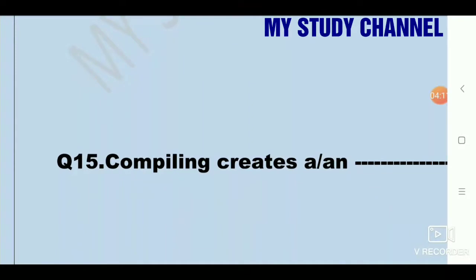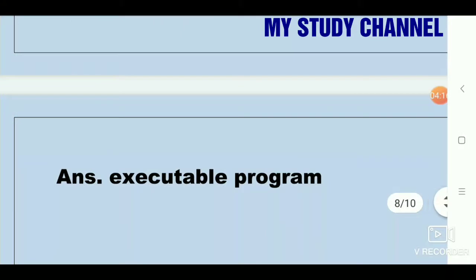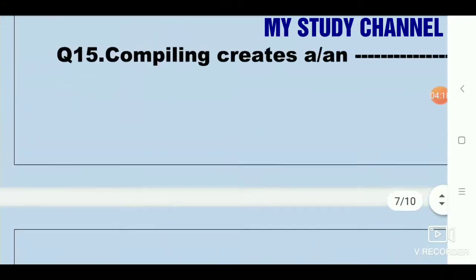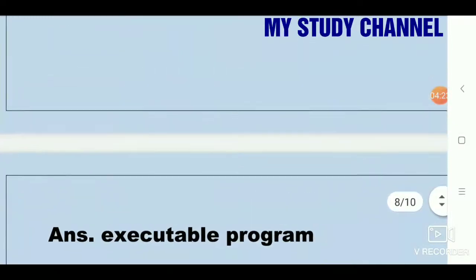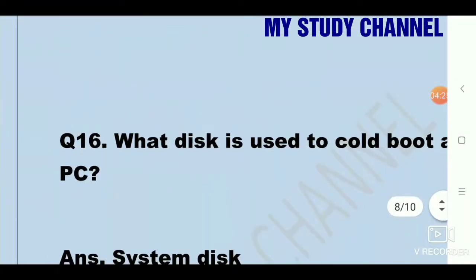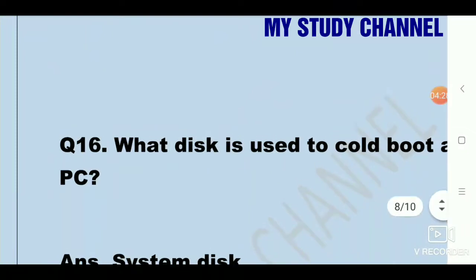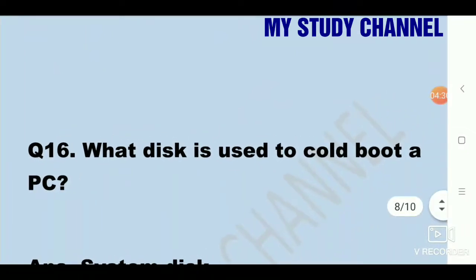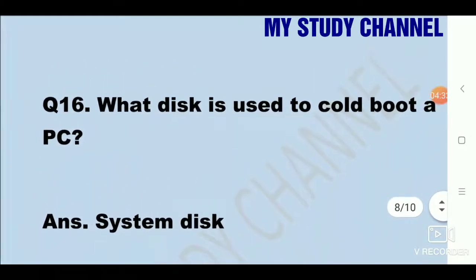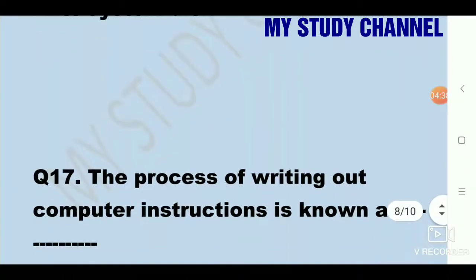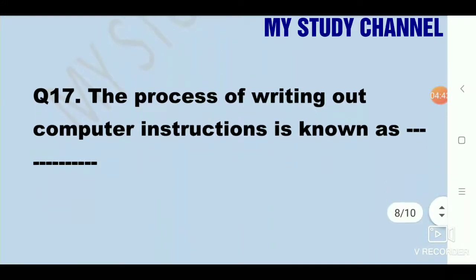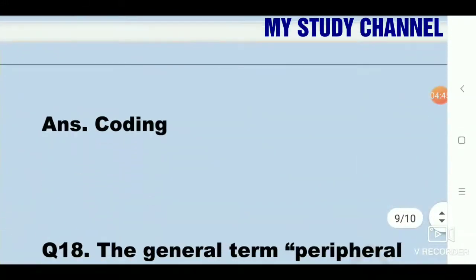Next question, compiling creates an oblique and dash. Answer is executable program. Next question, what disk is used to cold boot a PC? Answer is system disk. Next question, the process of writing out computer instructions is known as dash. Answer is coding.